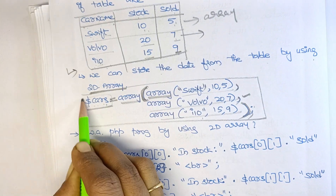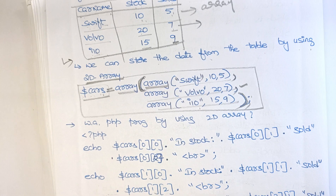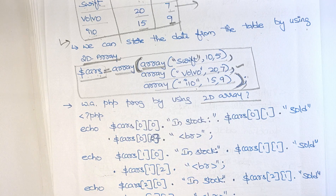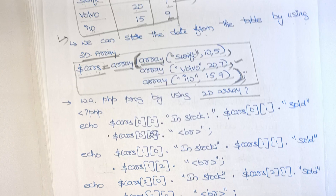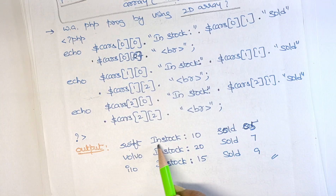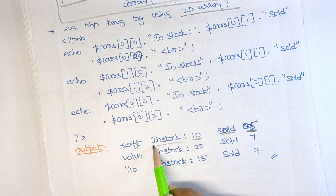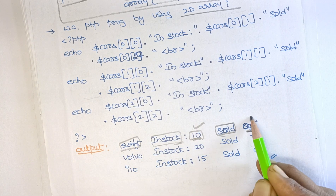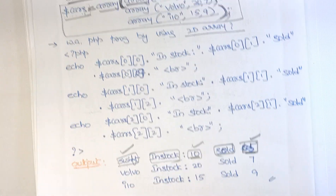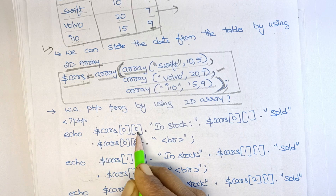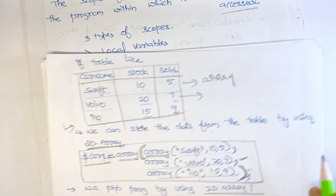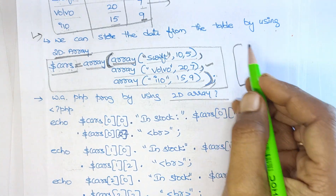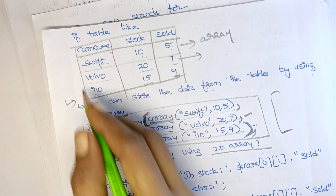This is the multidimensional array. Now let's write a PHP program using it. I want to print output like: 'Swift in stock 10 sold 5'. The data comes directly from the table. The array stores information in the form of rows and columns. For example, echo dollar cars of 0 comma 0 — row 0, column 0 — gives the value 'Swift'.